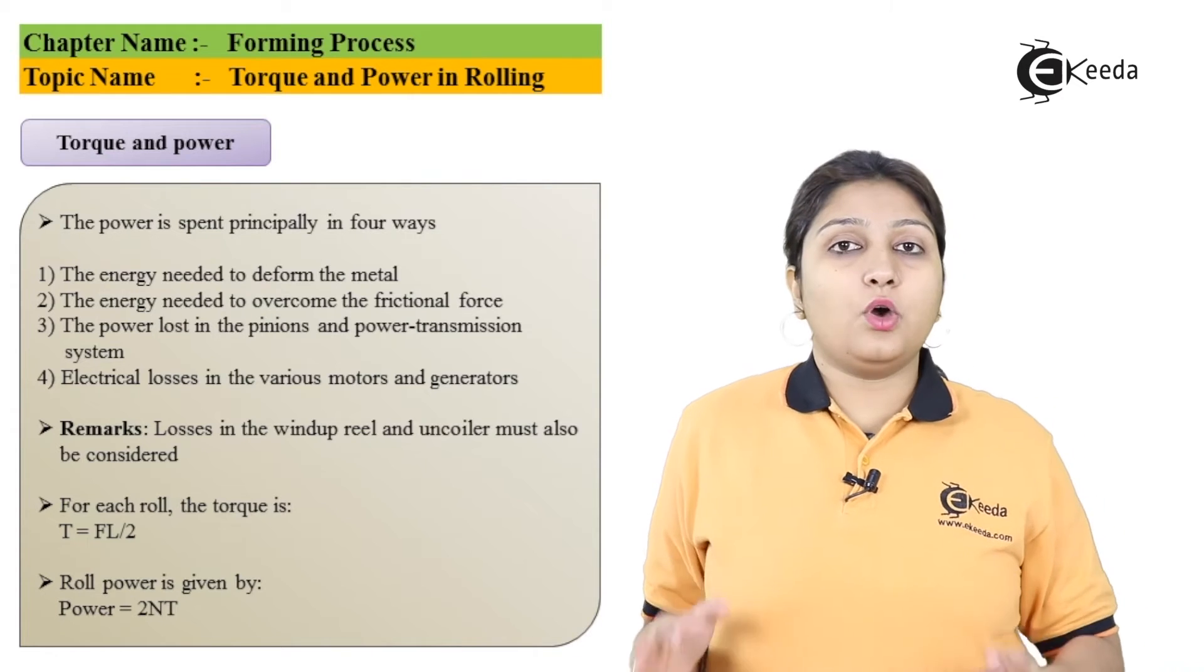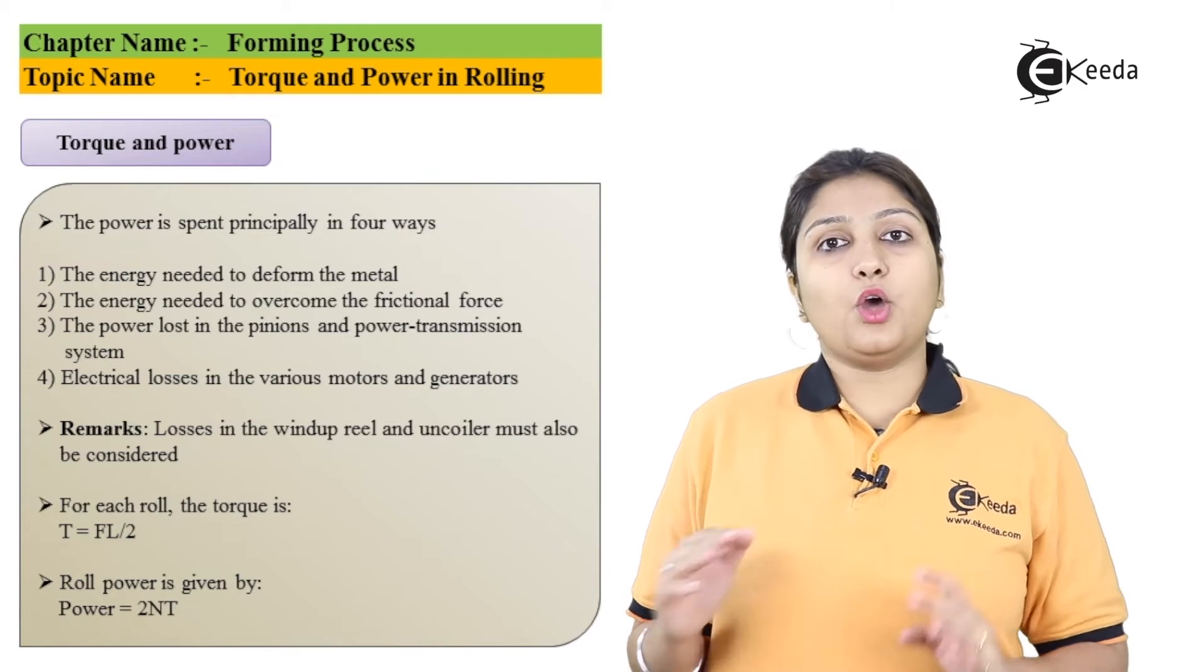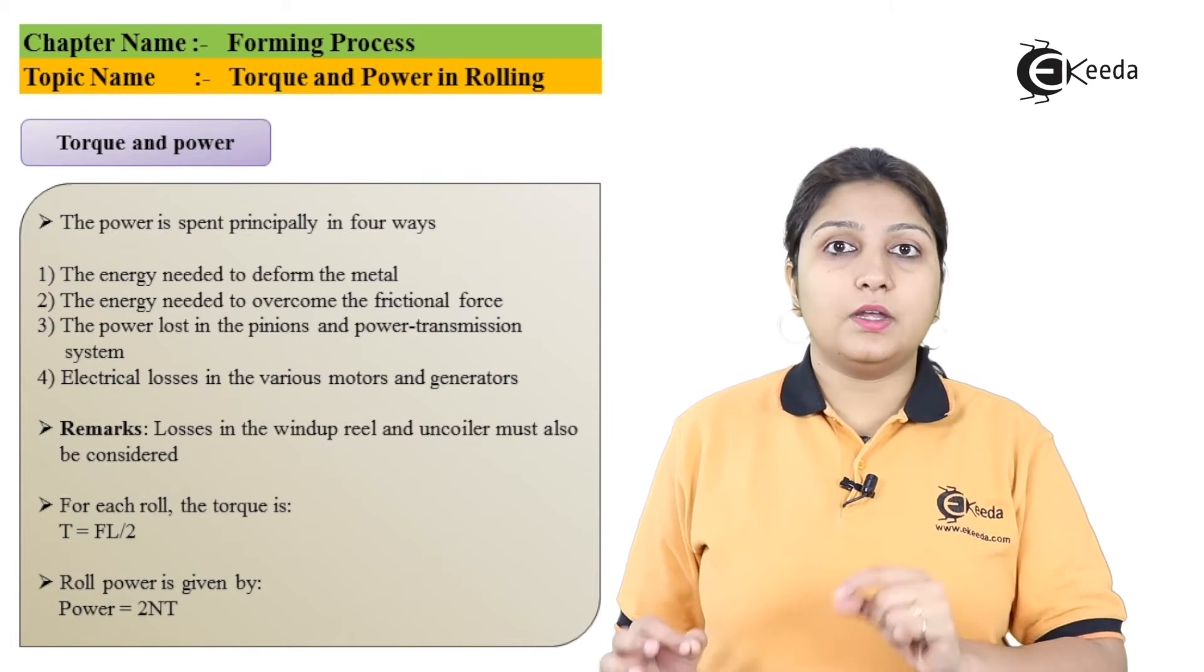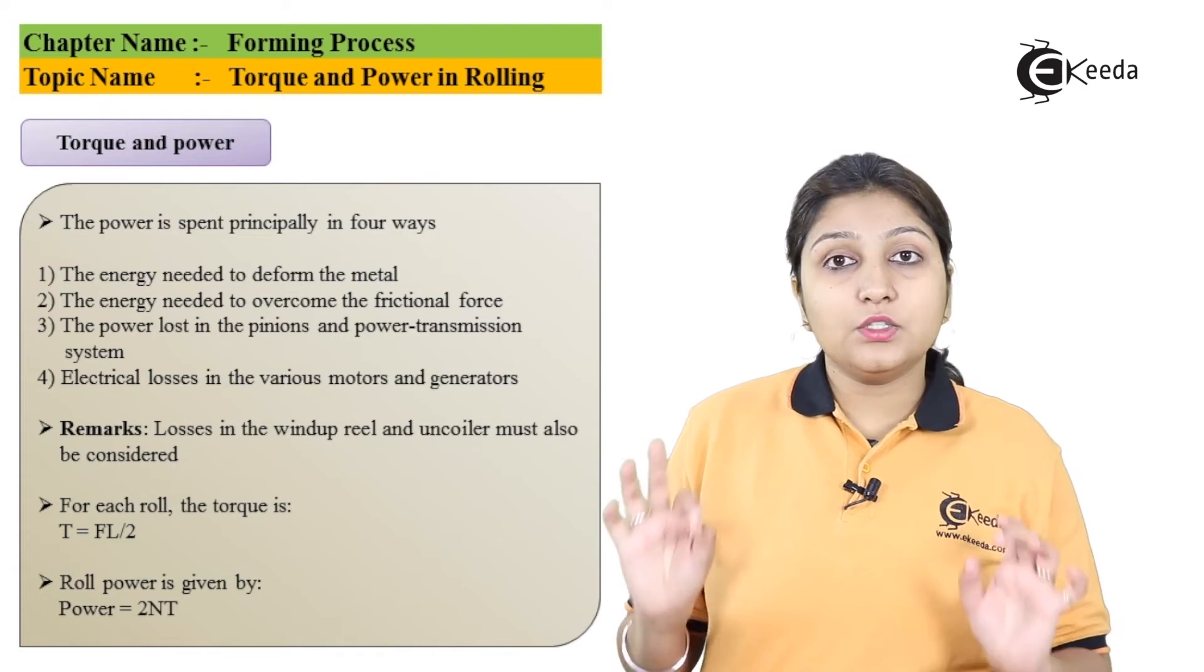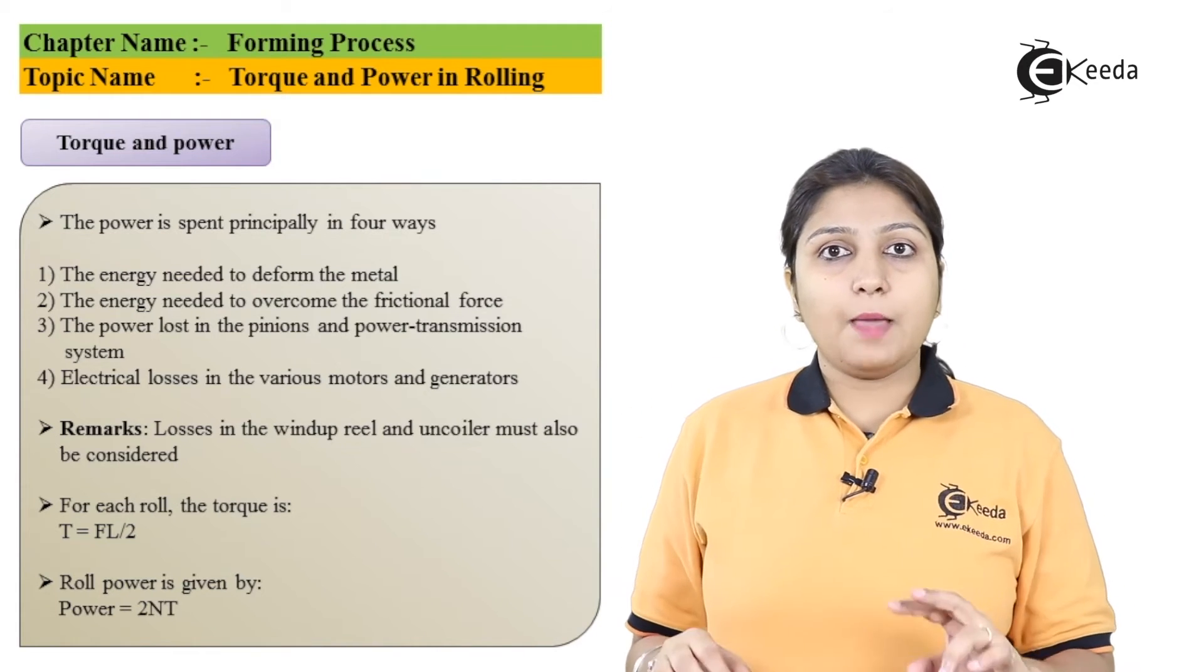Basically, the formula of torque is force into perpendicular distance. So if I talk about a roller, a roller has a perpendicular distance named as its radius, as the force is moving in the central direction, which is due to centripetal force in a rolling object.